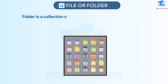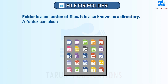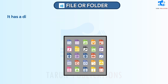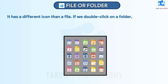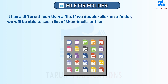A folder is a collection of files. It is also known as a directory. A folder can also contain subfolders in itself. It has a different icon than a file. If we double-click on a folder, we will be able to see a list of thumbnails or files which are a part of that folder.